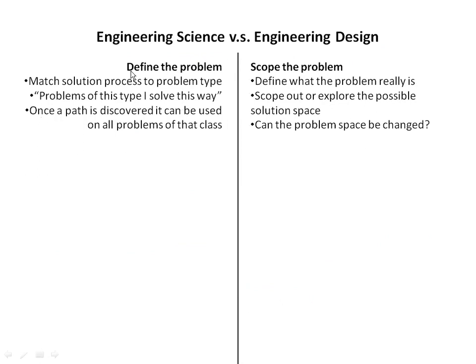In engineering science, you start off by defining the problem — this is the type of solution that solves this problem type, and once you discover the path, you can use it on all problems of that class. In engineering design, however, you don't define the problem, but you scope the problem, sort of like scouting something out. You have to explore the possible solution space. Your first guess may limit that solution space, so you have to expand your thinking divergently to really understand what the problem is, constantly asking how you can reconceptualize the problem to have more, cheaper, or better options.